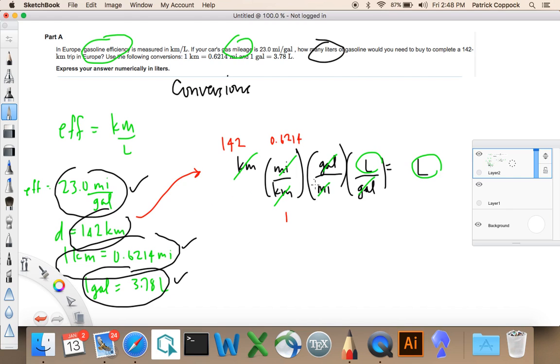What numbers go here, gallons and miles? It looks like it's 1 gallon per 23.0 miles. That's right here. And then what numbers go here? That looks like it's 1 gallon and 3.78 liters. All right, so that's going to be our answer.